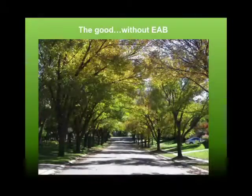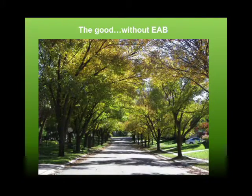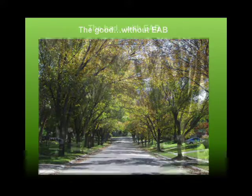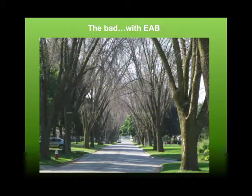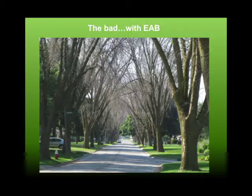The first couple slides I just wanted to show some pictures of the impact that emerald ash borer has. This is a nice residential street lined with ash trees before emerald ash borer hits. This is what happens after it hits and has a chance to kill off the trees. There are some communities in Iowa suffering huge impacts already — Waterloo and Burlington, Iowa come to mind.